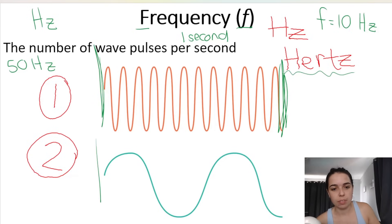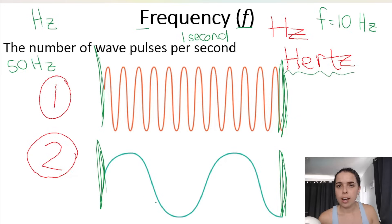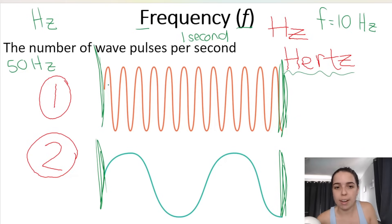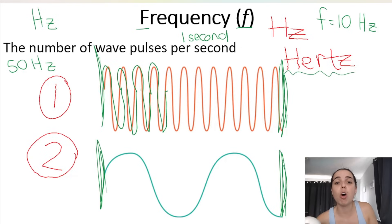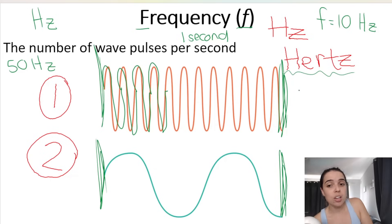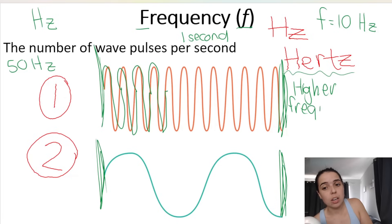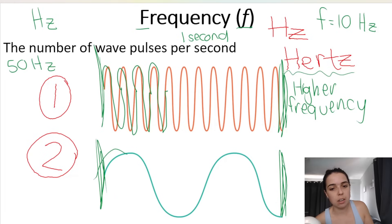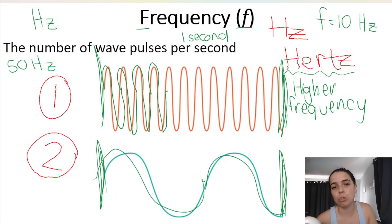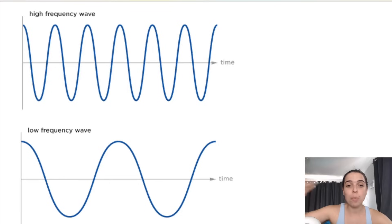Which wave — number one or number two — has the higher frequency? Let's say it takes one second for each diagram. Wave number one clearly has more wave pulses per second — there are a lot of wave pulses passing in that one second, so wave number one has a higher frequency. Wave number two has only about one to almost two wave pulses in that second — that's a lower frequency. On the top we have a high frequency wave; on the bottom, a low frequency wave.